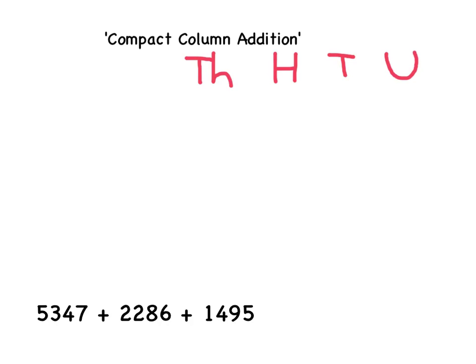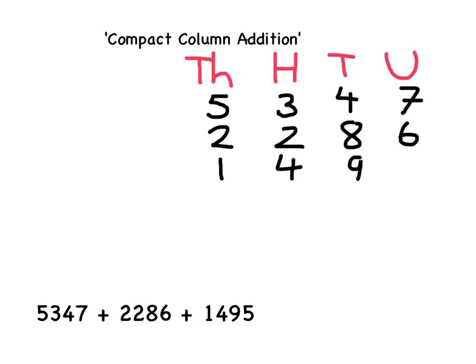Now that I have each of these columns labeled, I'm going to write out 5,347, 2,286, and 1,495. I must remember to put in the add sign as well to show that I'm adding these three four-digit numbers.